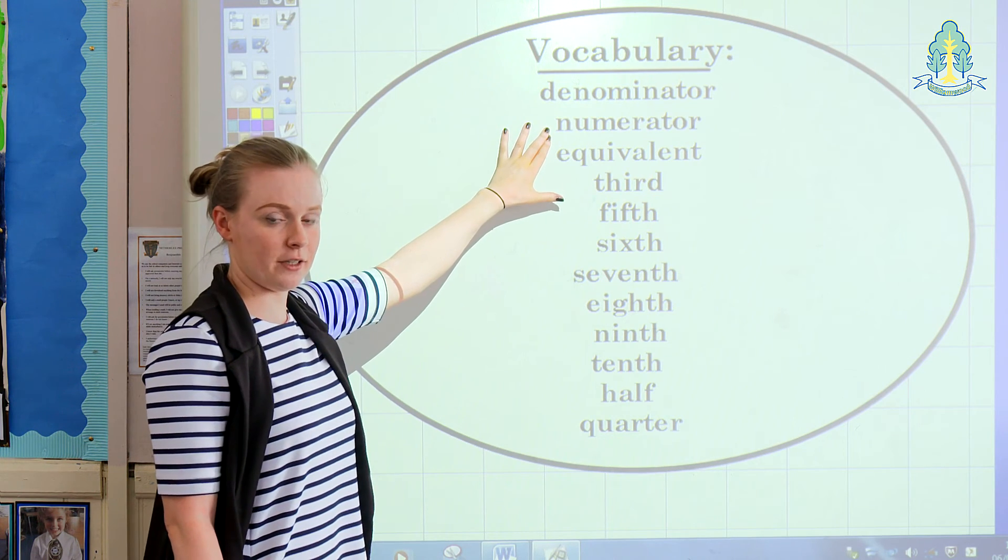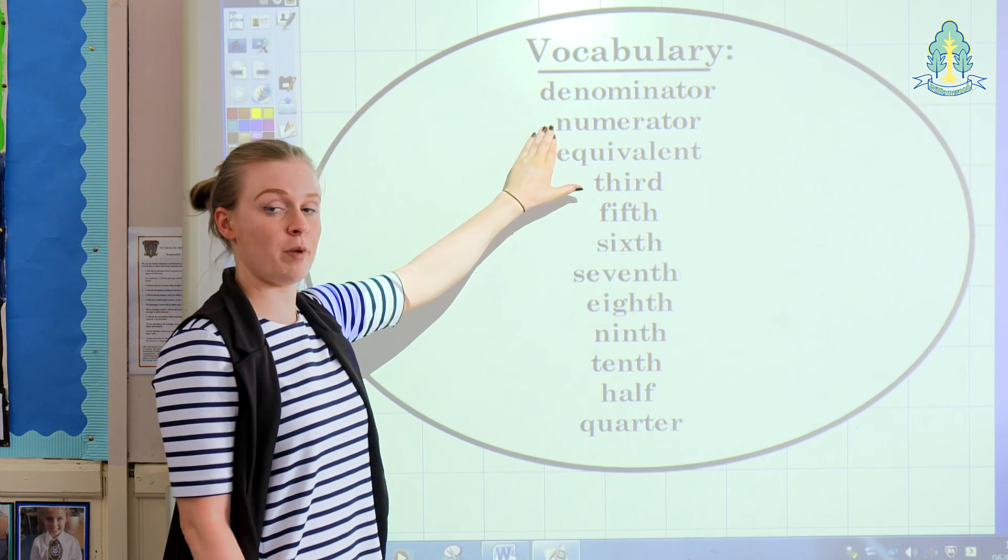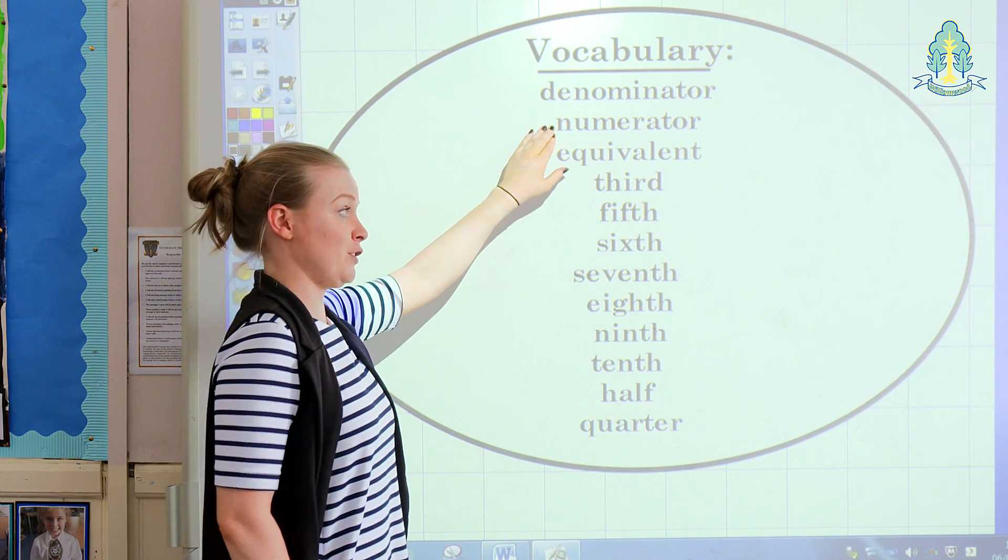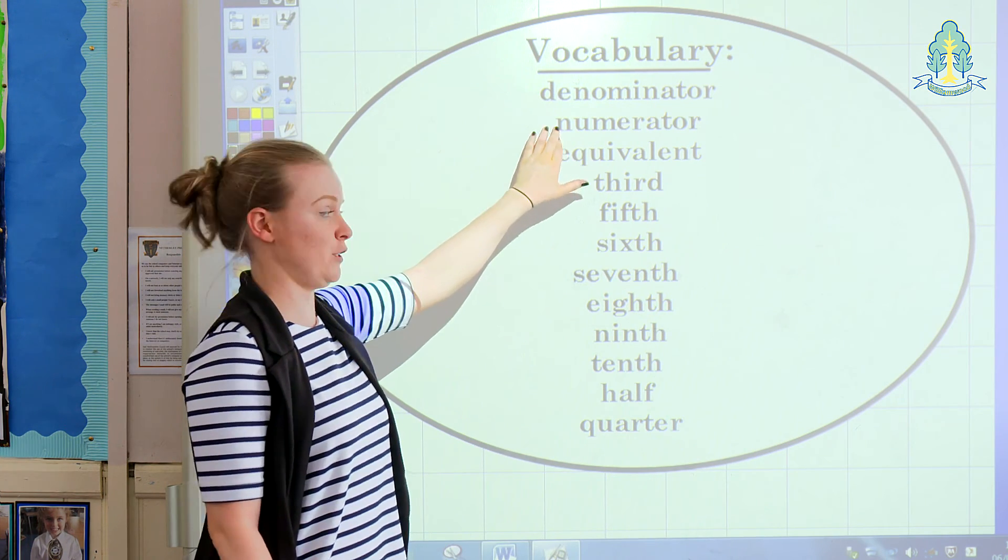The numerator, the number at the top of the fraction, which shows the number of parts taken. For example, if I took two pieces of pizza, the numerator would be 2.